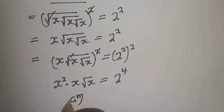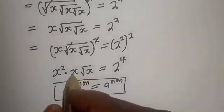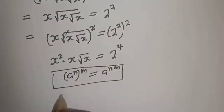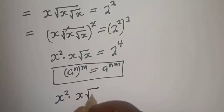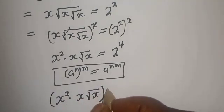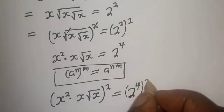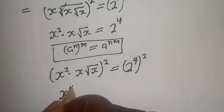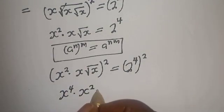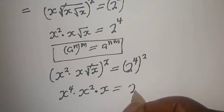Using the exponential rule that a raised to power n, to the power of m, is equal to a raised to power n times m. From here, let's take the square of both sides. The s squared with s squared will cancel this. We have s raised to power 4, multiplied by s squared. This will cancel, multiplied by s.